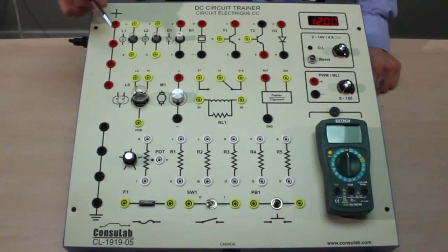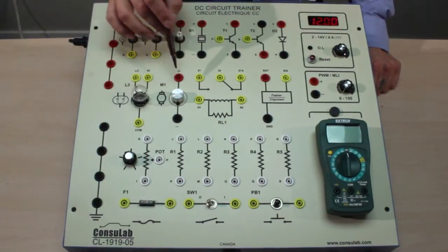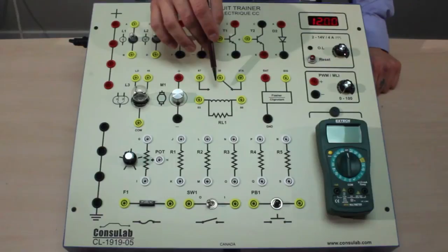Single filament and dual filament light bulbs, light emitting diode, a buzzer, NPN and PNP transistors, a diode, an electric motor, a 5-pin ISO relay.